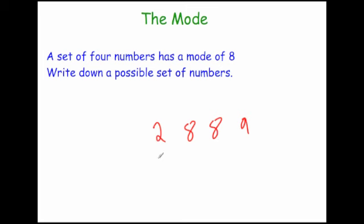We could also do something like this. The set of numbers could be 8, 8, 8, and 10. Just as long as 8 happens more often than the other numbers, then that means it's the mode.